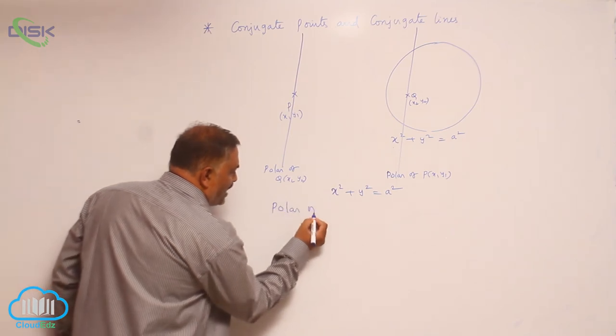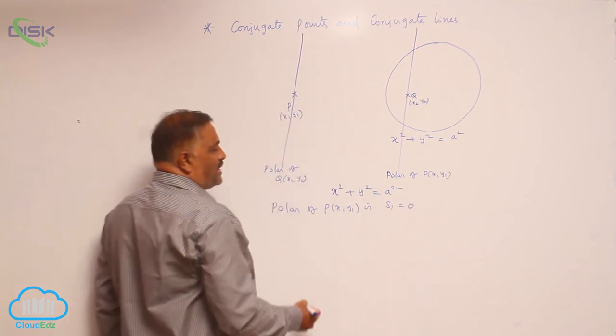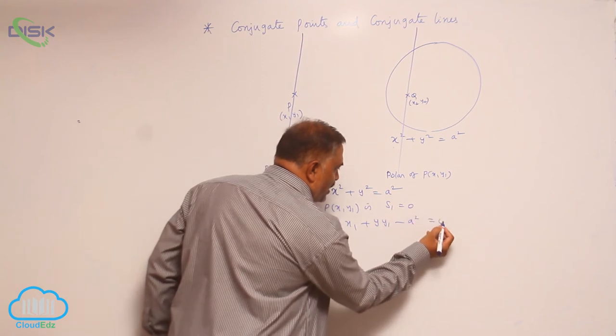Now, polar of p x1 y1 is s1 is equal to 0. How to write s1 now? x x1 plus y y1 minus a square equal to 0.